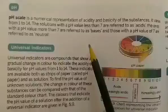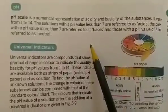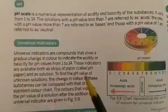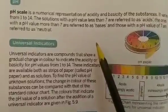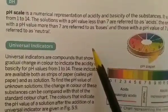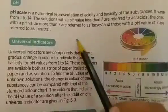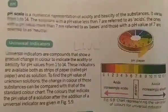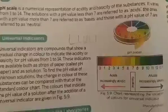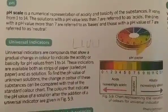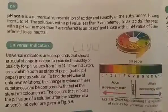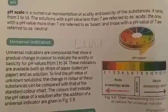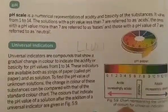Through litmus paper we can detect which solution is an acid and which is a base, but we can only find out if a given chemical is an acid or a base. But how do we find out which acid is strong and which acid is weak? If I have three beakers and dip blue litmus paper, both blue litmus papers will convert to red — but we can't tell which acid is stronger. For this purpose we have the pH scale.